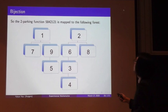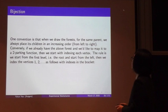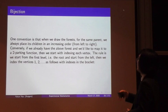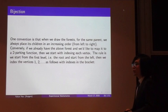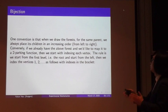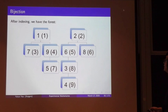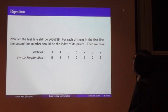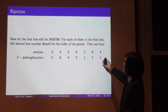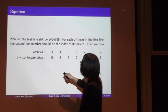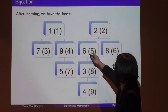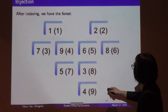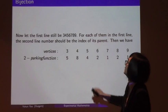To map the forest back to a parking function, we use a convention: for the same parent, children are placed in increasing order from left to right, and nodes are indexed level by level from left to right. Our interpretation: the second line of the two-line notation gives the index of the parent. For example, the parent of vertex 3 is 6, whose index is 5, so the entry is 5. Similarly, the parent of 4 is vertex 3, whose index is 8, so that entry is 8.